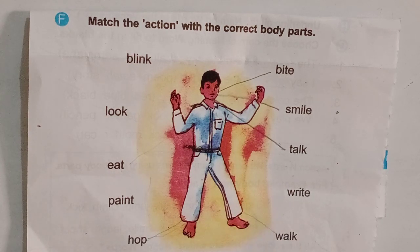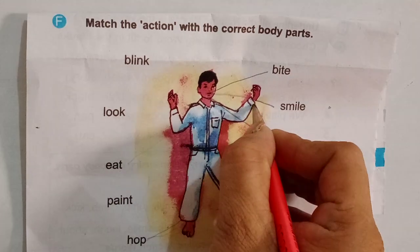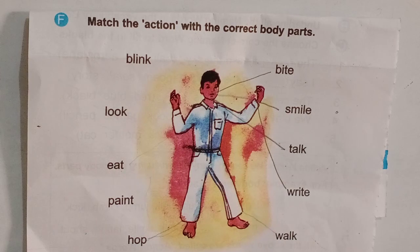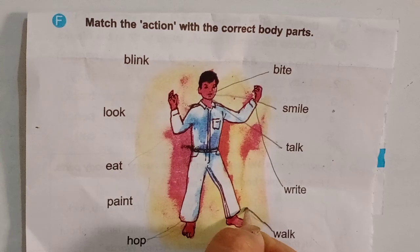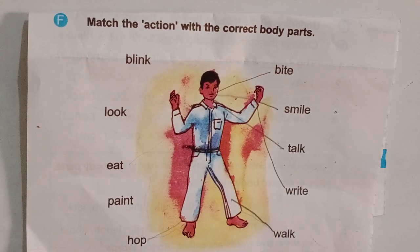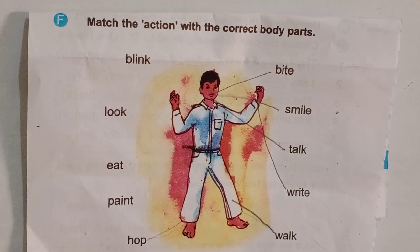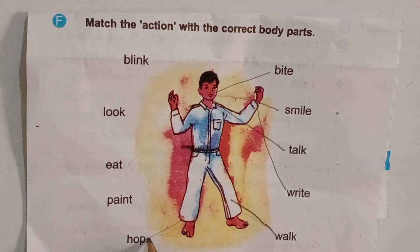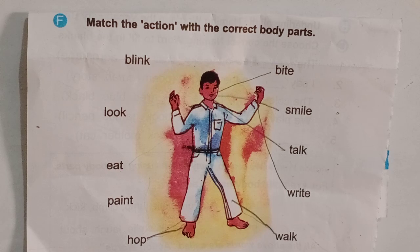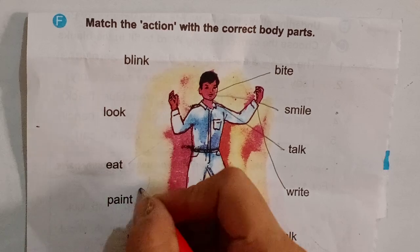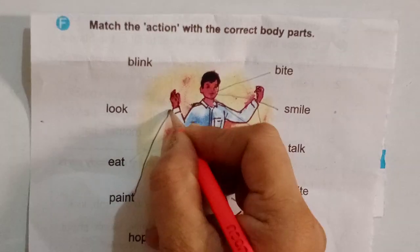How can we write? We write with our hands. So, you will match the word write to hands. Do you know how can we walk? We walk with our legs. So, you will match the word walk to the legs. How can we hop? We hop with our foot. So match hop to foot. And how can we paint? We can paint with our hands.